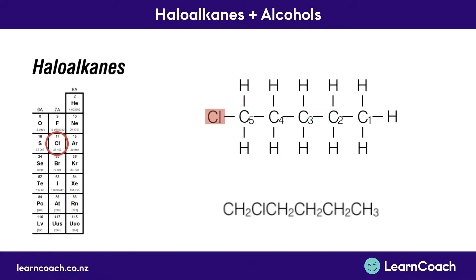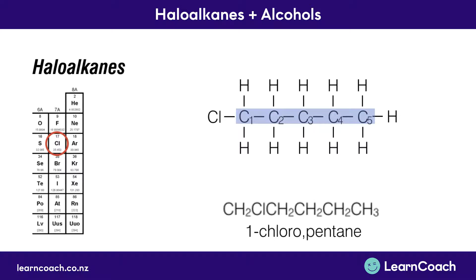This one's a little harder. The chlorine is attached to the fifth carbon, but chemists like to keep naming as simple as possible — we want the number in front of the chloro- to be the smallest number possible. So we remove all our numbering and flip it so that becomes the first carbon. We've got five carbons so it's pentane, and our chlorine is now attached to the first carbon instead of the fifth, making this 1-chloropentane. This numbering rule is really important and applies to all hydrocarbons, including alcohols and later functional groups.